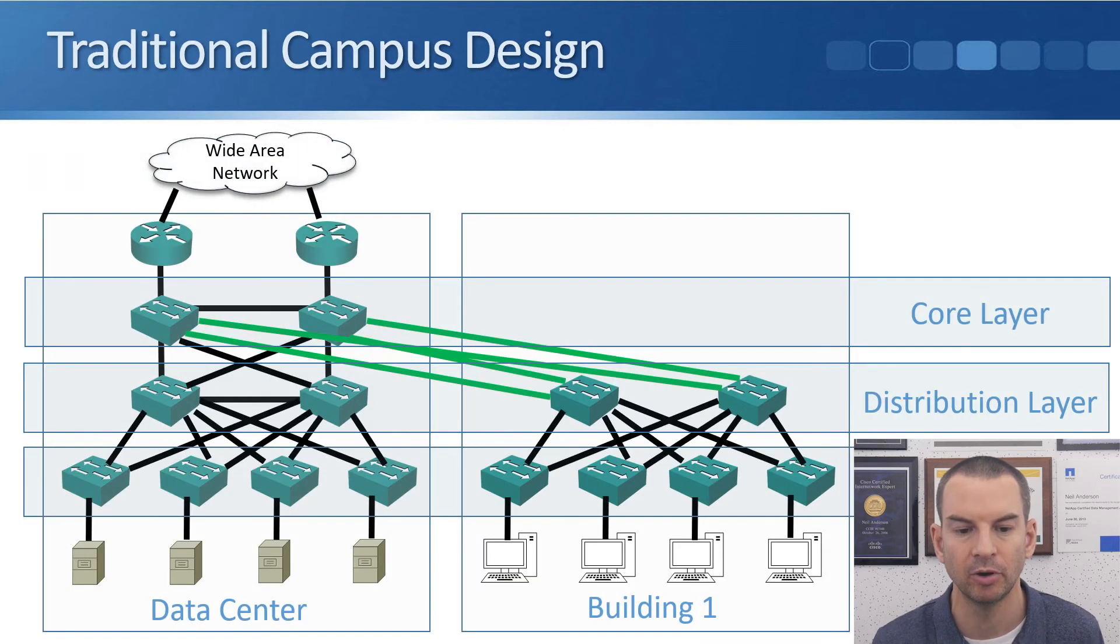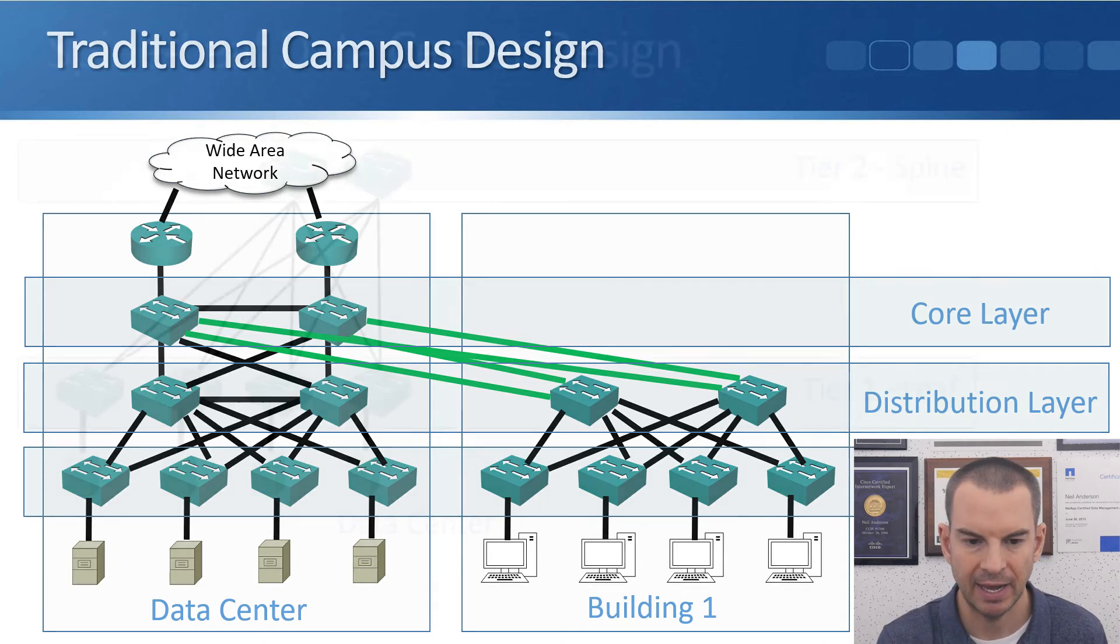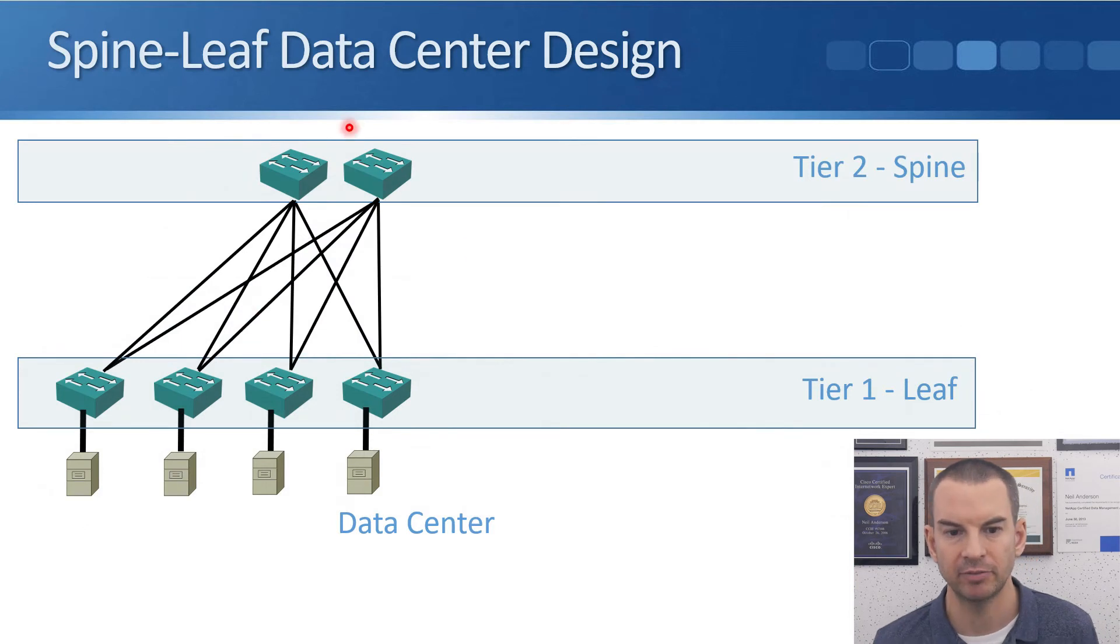Going back to the traditional model again, you can see here that we pair up our distribution layer switches and we also pair up our core layer switches. That gives us some load balancing and also redundancy because we wouldn't want to have a single point of failure. This example for the Spine-Leaf design right now looks the same, but it's actually designed where we can get additional scalability and better performance for our east-west traffic flows.